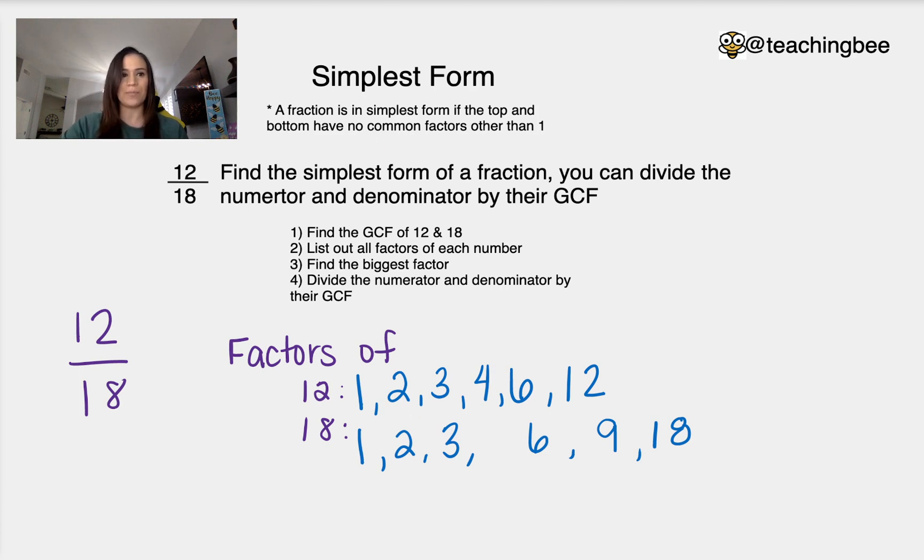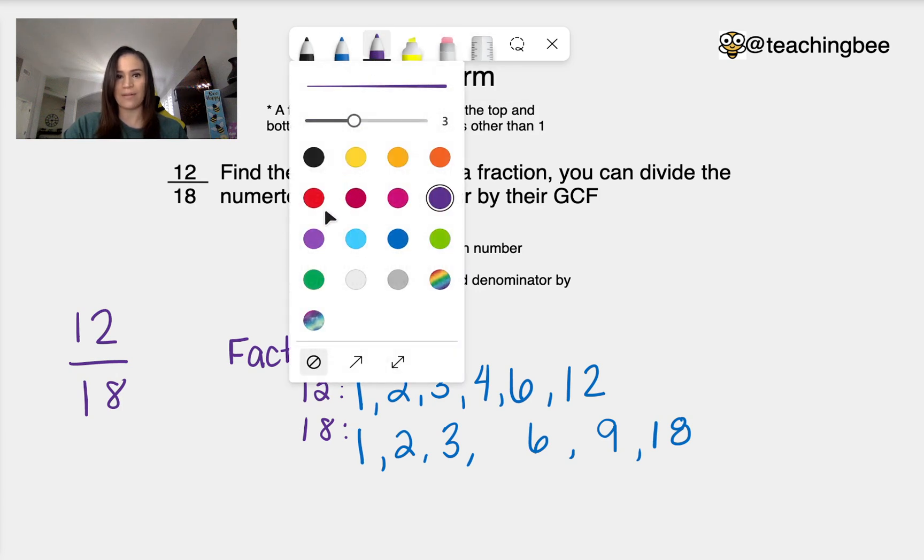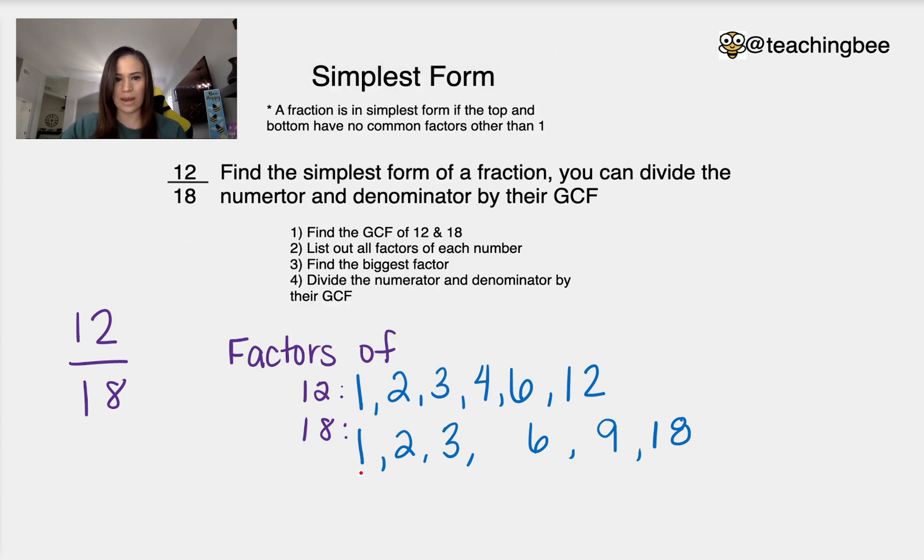So with that said what do we have here that are in common? We have our 1 is in common, our 2 is in common, 3 is in common, no 4, 6 is in common, no 9, and then 12 and 18 are not as well. So our greatest common factor is 6.